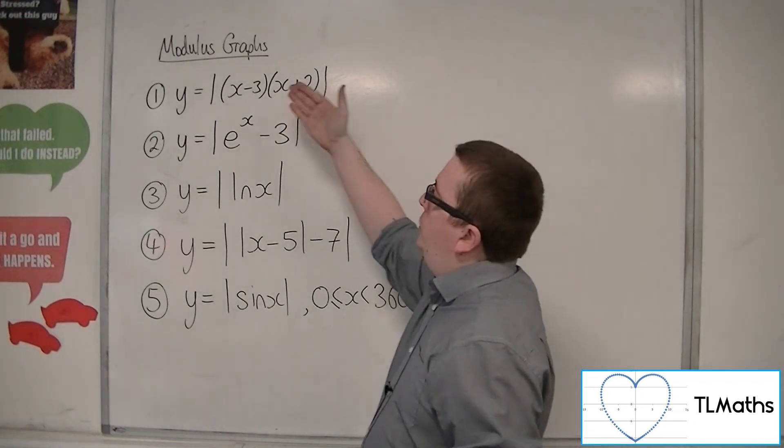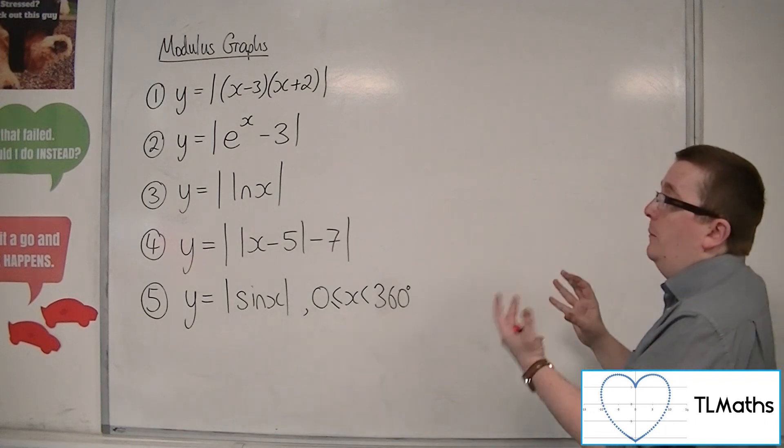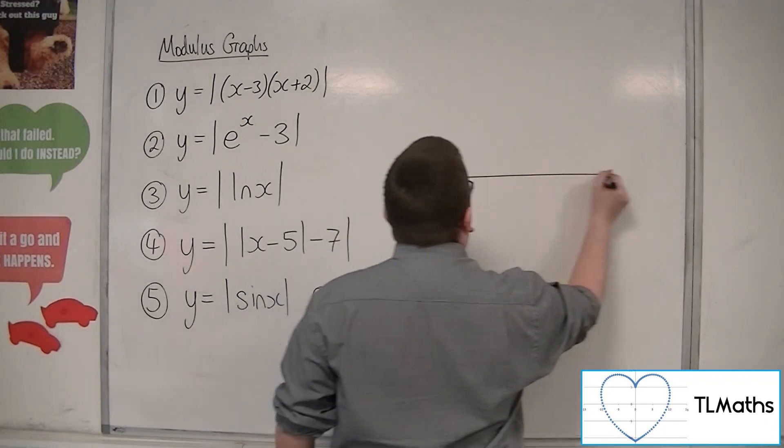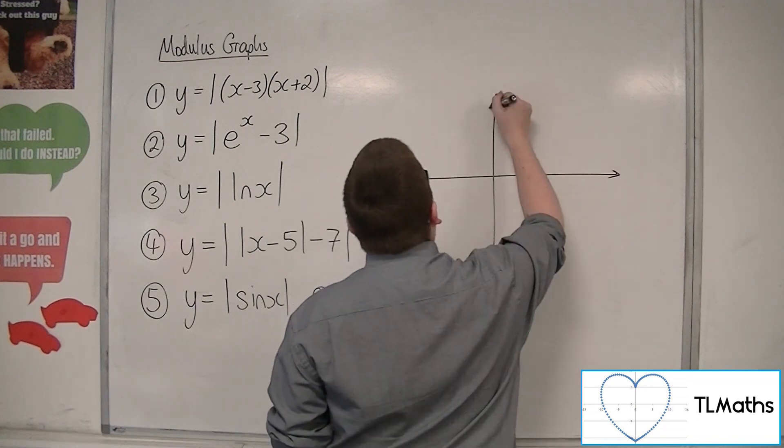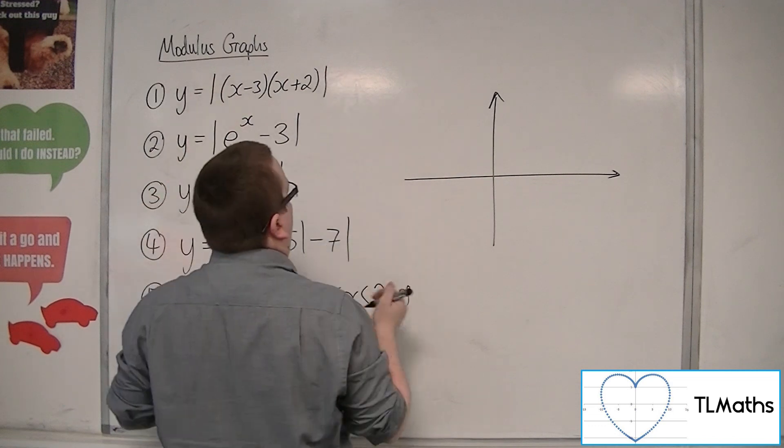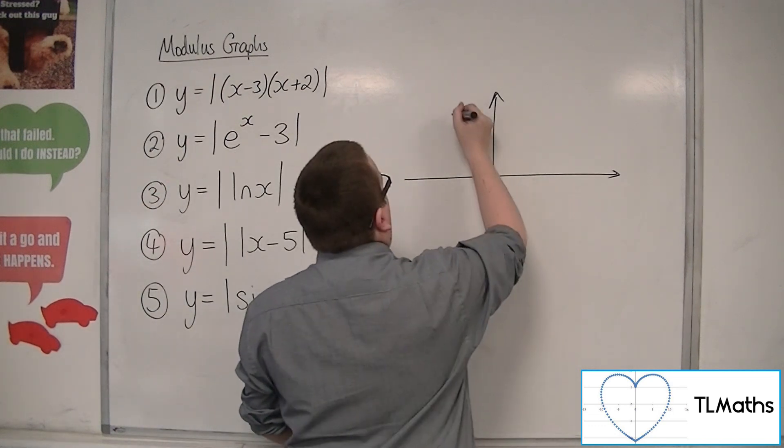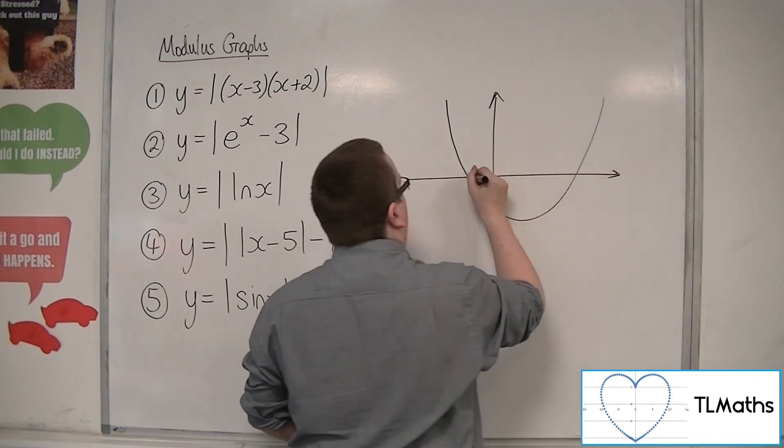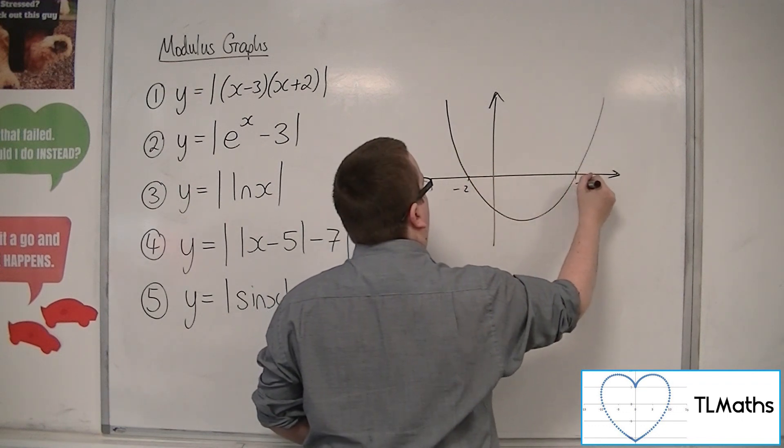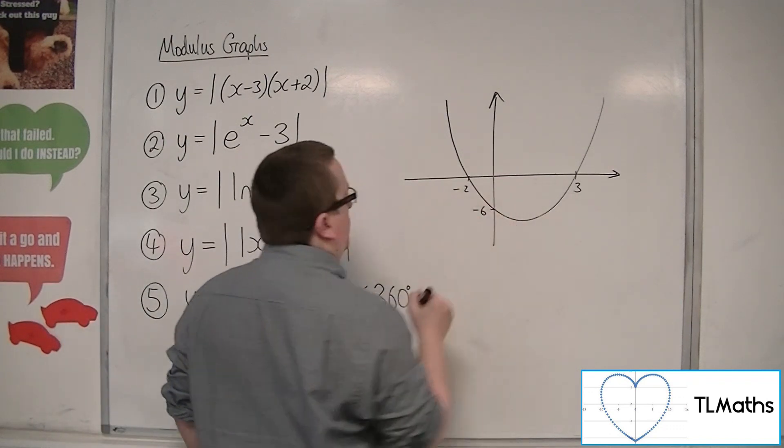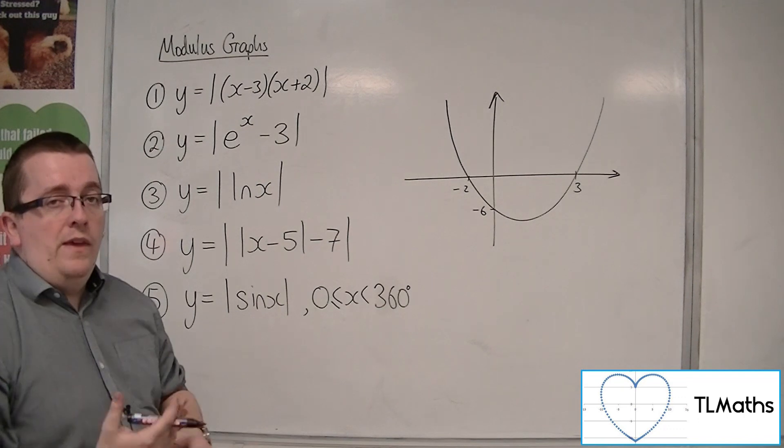So if we've got y equals the modulus of (x minus 3)(x plus 2), for example, now this ordinarily, if you ignore the modulus signs, is a parabola. It's going through 3 and minus 2 on the x-axis, so minus 2 and 3, like so, and would be going through minus 6 on the y-axis. So it would look like that.